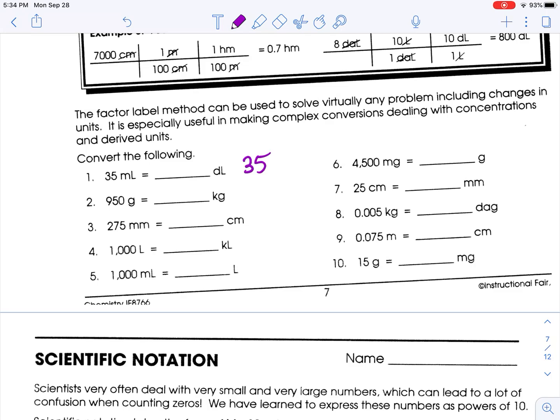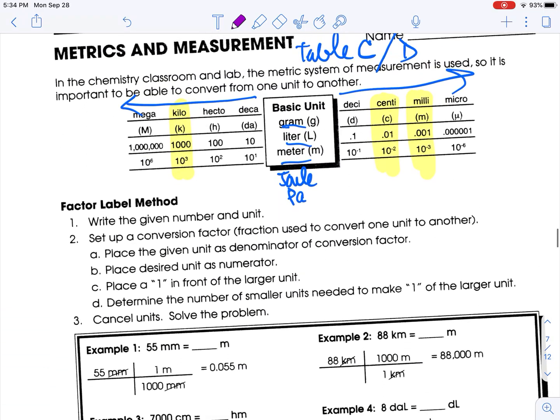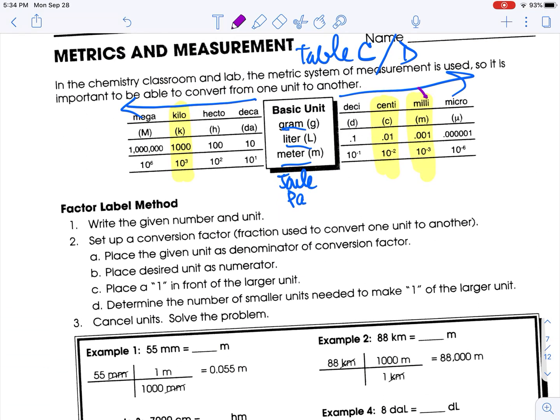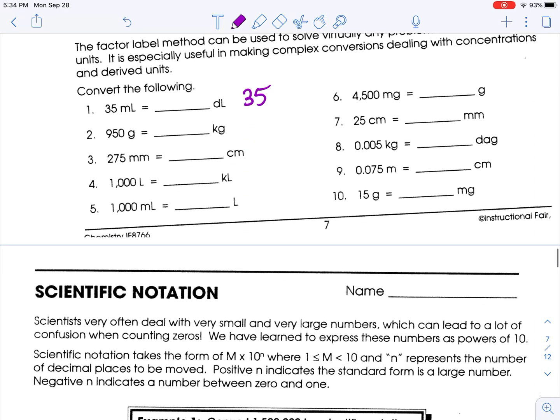So here's 35 milliliters. Okay, now this sheet shows you the factor label method, which we absolutely could do, but for these it's just kind of easier. So look at the top. We're going to go from milli to deci. So that means move your decimal place two spots to the left.